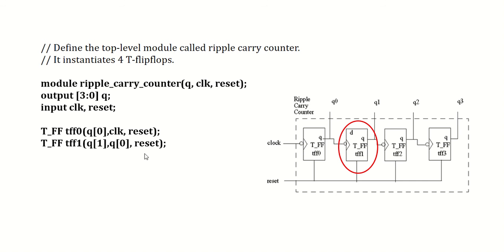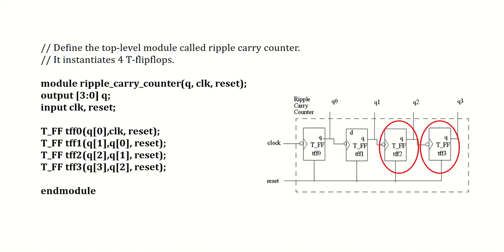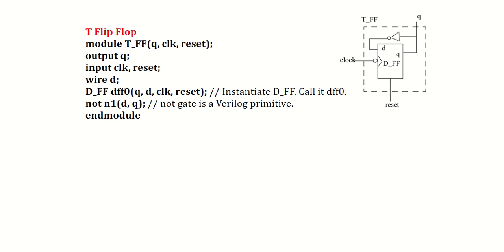because Q[0] acts as the clock input for the next T flip-flop. So TFF1 has Q[0] in place of clock, with reset being common. The next two T flip-flops TFF2 and TFF3 are instantiated similarly. TFF2 has output Q[2] and input Q[1]; TFF3 is instantiated similarly. The module ends with endmodule.